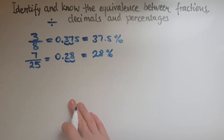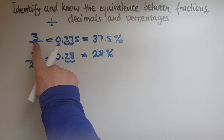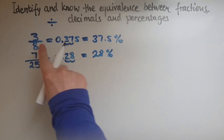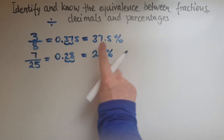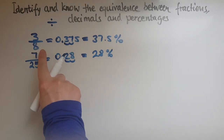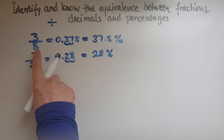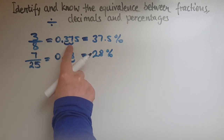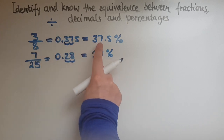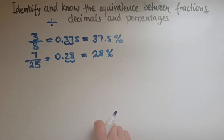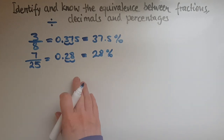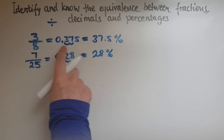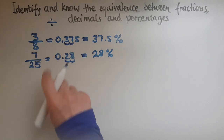So we've converted fractions to decimals and to percentages. If asked to convert a fraction to a percentage, go through the decimal first and then into a percentage. If you just want a decimal, simply divide the numerator by the denominator.